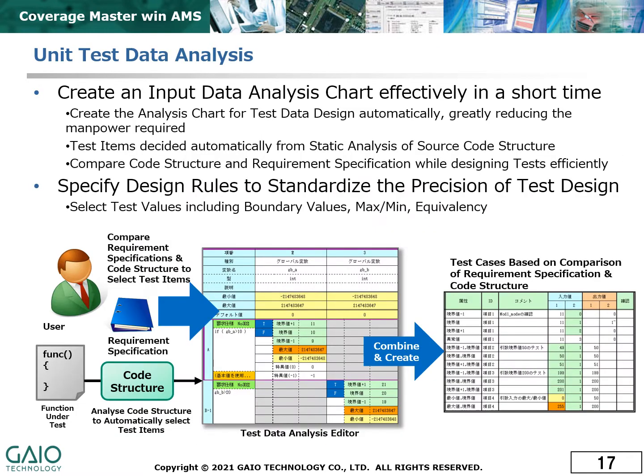Our input data analysis algorithm can analyze the source code to determine automatically what variables should be used in unit testing, and suggest test values such as maximum, minimum, and condition boundaries. These can then be confirmed and fine-tuned in our test data analysis editor.